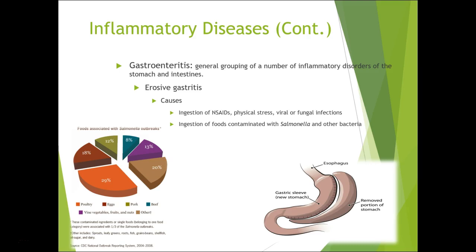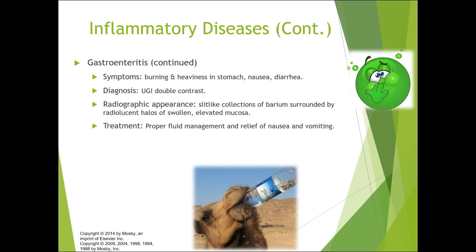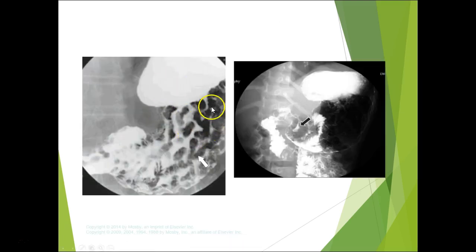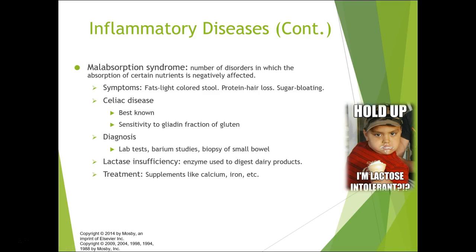Gastroenteritis is a grouping of inflammatory disorders of the stomach. Erosive gastritis is caused by ingestion of irritants, physical stress, viral or fungal infections, or foods contaminated with Salmonella. Symptoms include burning and heaviness in the stomach, nausea, and diarrhea. Diagnosed with double-contrast upper GI. Radiographically you see slit-like collections of barium surrounded by radiolucent halos of swollen elevated mucosa. The image shows very deep, thick rugal folds — that is gastritis with visible inflammation.